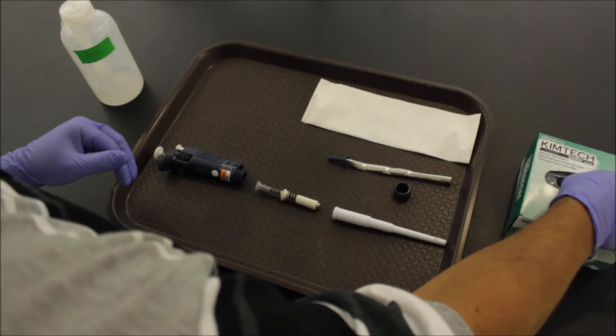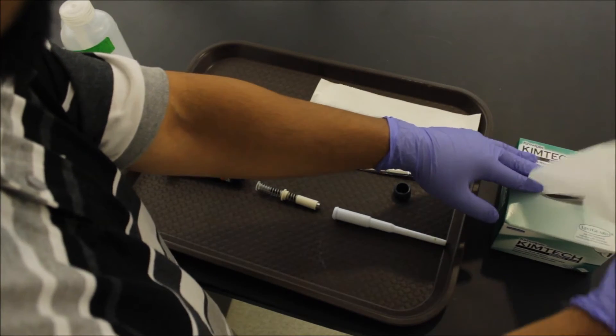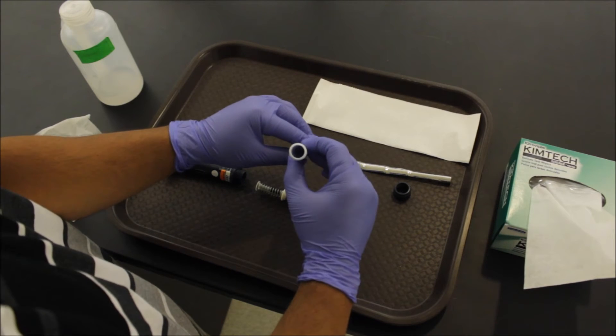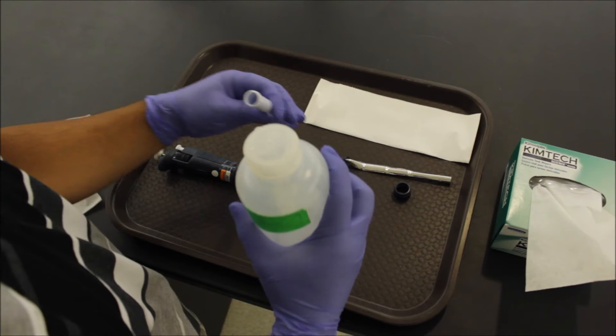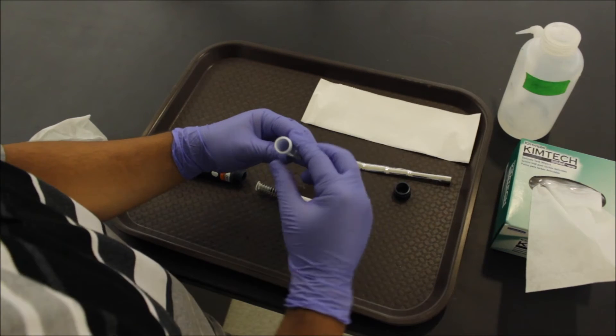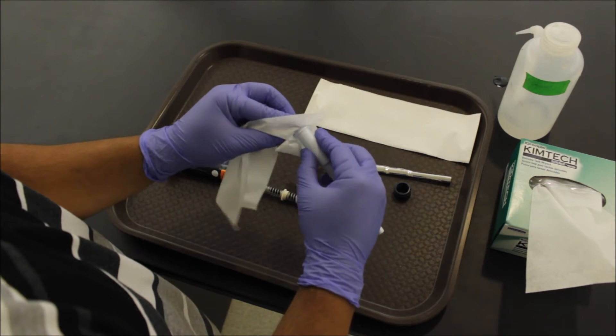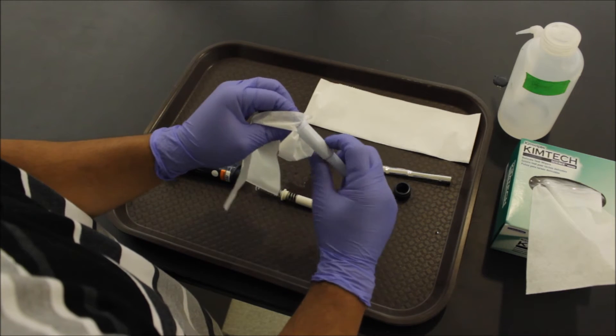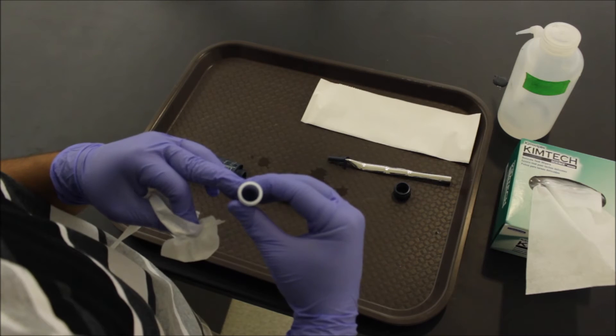Grab your chem wipe. Right here you want to look down the barrel of your pipette. Make sure there's no goop or debris. If there is, go ahead and give it a little spritz of ethanol. You can use as much ethanol as necessary right here. Give it a wipe. Feel free to be aggressive here. Take another look.